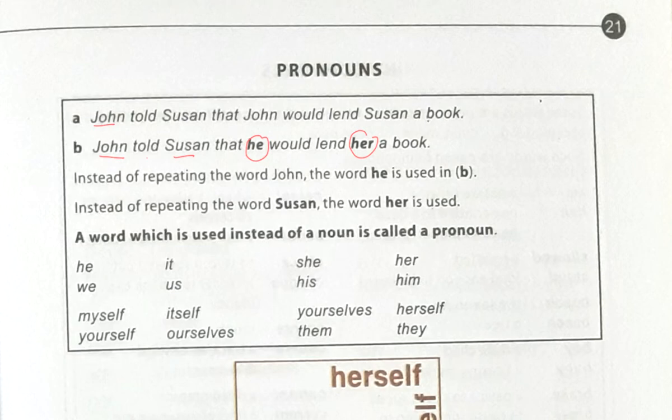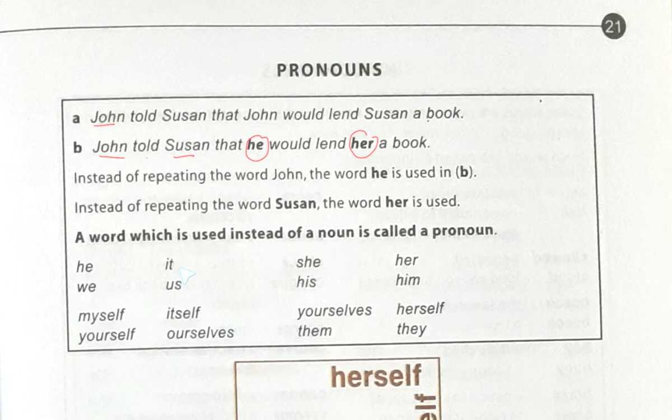And instead of repeating the word Susan, the word 'her' is used in its place. So what we have got: a word which is used instead of a noun is called a pronoun. 'Pro' means 'instead of' — instead of a noun. A word which stands in place of a noun, or in lieu of a noun, is called a pronoun. Here are some pronouns: he, we, it, us, she, his, her, him.